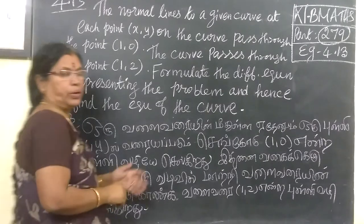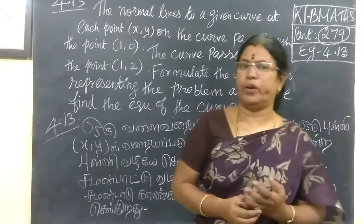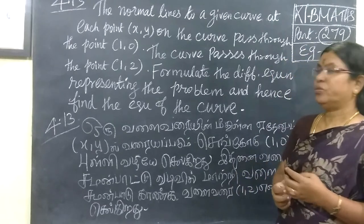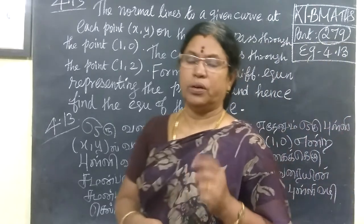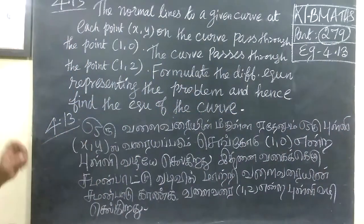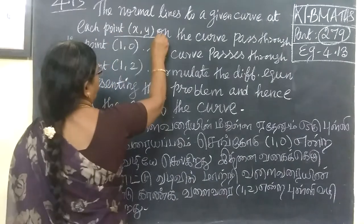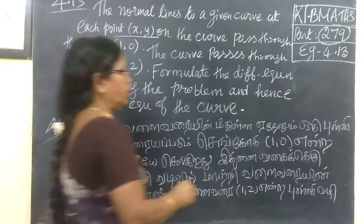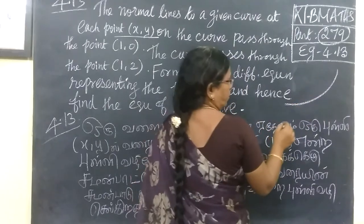As you can see, for example, problem 4.13: the normal line to a given curve. The curve is this. As you can see, the normal line is this. At the point, the X and Y is this. The point is this, and the X and Y is this. And the curve is this.